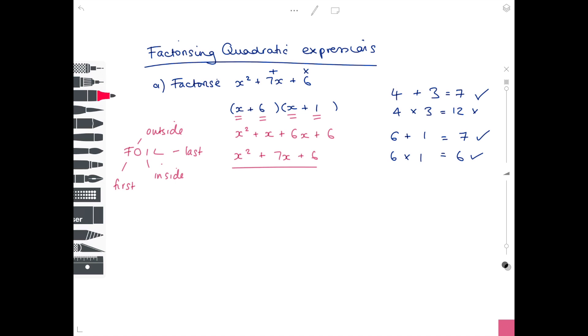That bit I've done in pink is just proving that my answer is right. In maths, it's always good to check your answer if you can. In part B, we're factorising x² - 7x + 12. So we need our two brackets. We know that x goes in the front of the bracket, and now we're looking for two numbers which add to make -7 and multiply to make positive 12.